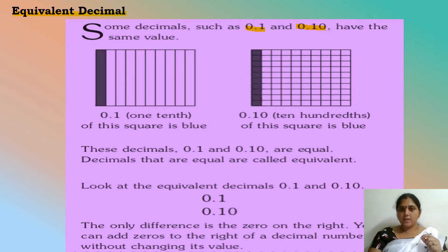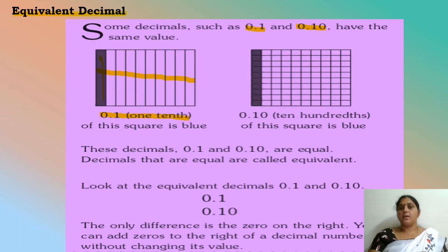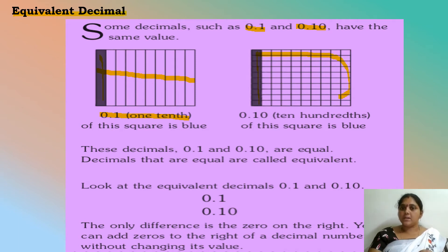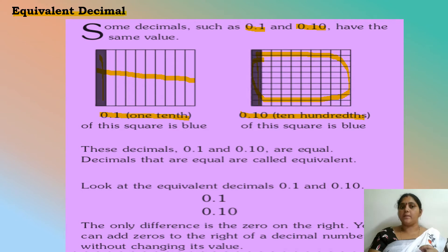We will see this by observing a picture. Here you can see 10 blocks, and 1 block is shaded blue — that is 0.1, or 1 tenth. In the next picture, 1 block is fully colored blue but the total number of blocks is 100, so we write it in decimal form as 0.10, or 10 hundredths. So 0.1 and 0.10 are equal.